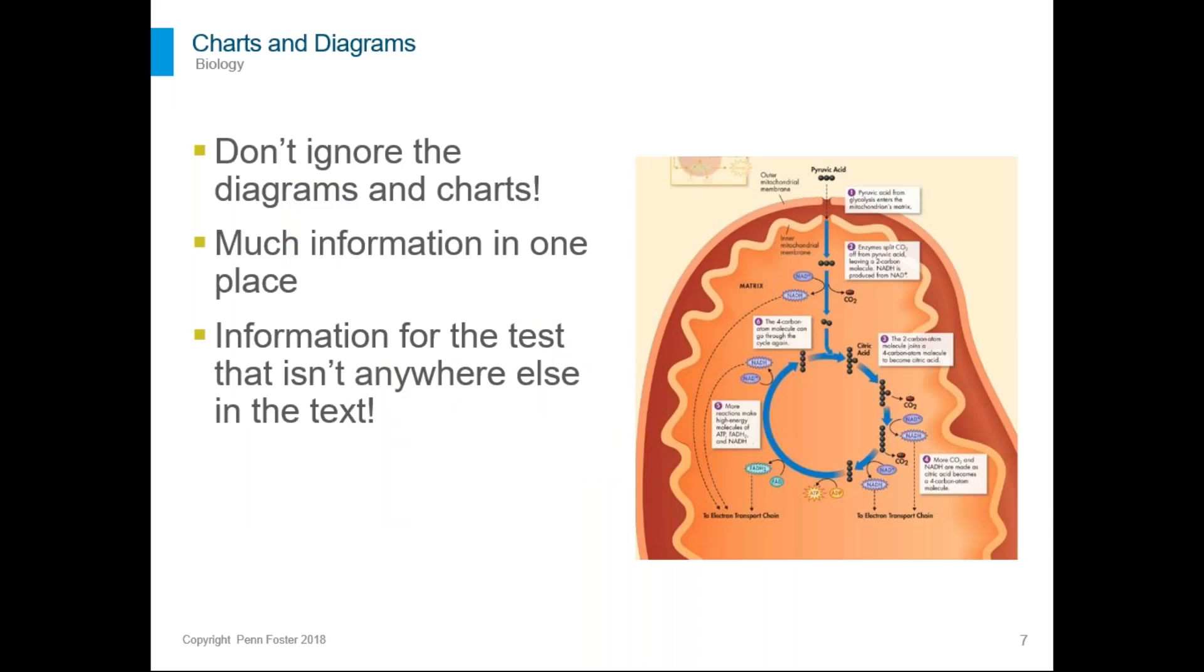So here's some more tips for what's in your book. You don't want to ignore the charts and diagrams for any science class. A lot of information is in one place and sometimes it's information that's not anywhere else in the text. For example, here's a diagram of cellular respiration and it goes through all of the steps of it and what's going on. You need to look at that diagram, try to understand it, follow all the steps on it. If you get a respiration question on the test this might be where the information comes from. So you don't want to skip over it.